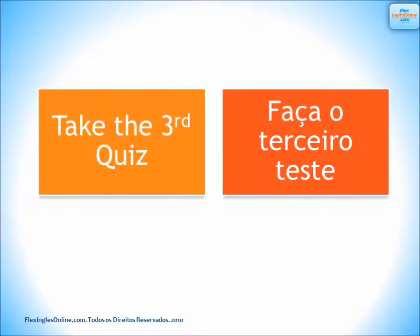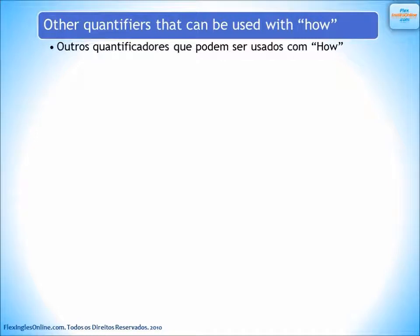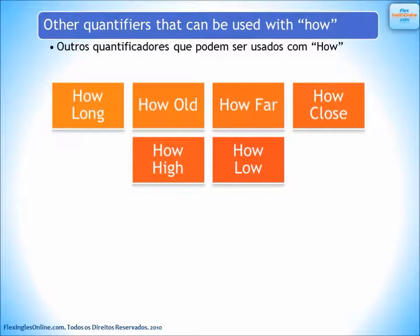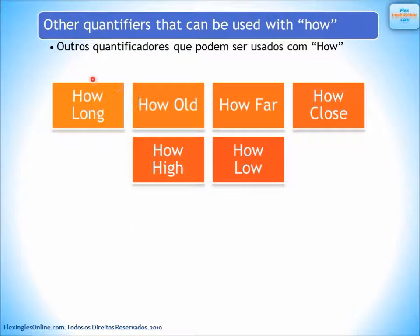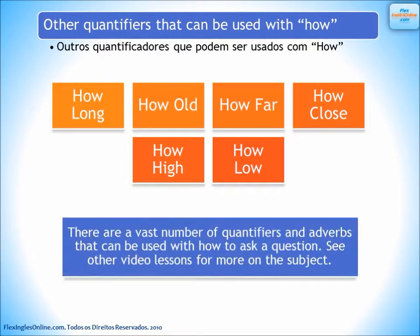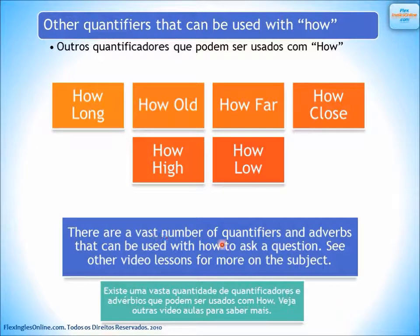Take the third quiz now. Other quantifiers that can also be used with how are: how long, how old, how far (for distance), how close (also for distance), how high (for height — altura), and how low. How long covers both time and length. There are a vast number of quantifiers and adverbs that can be used with how to ask a question. Take a look at other video lessons for more on the subject.